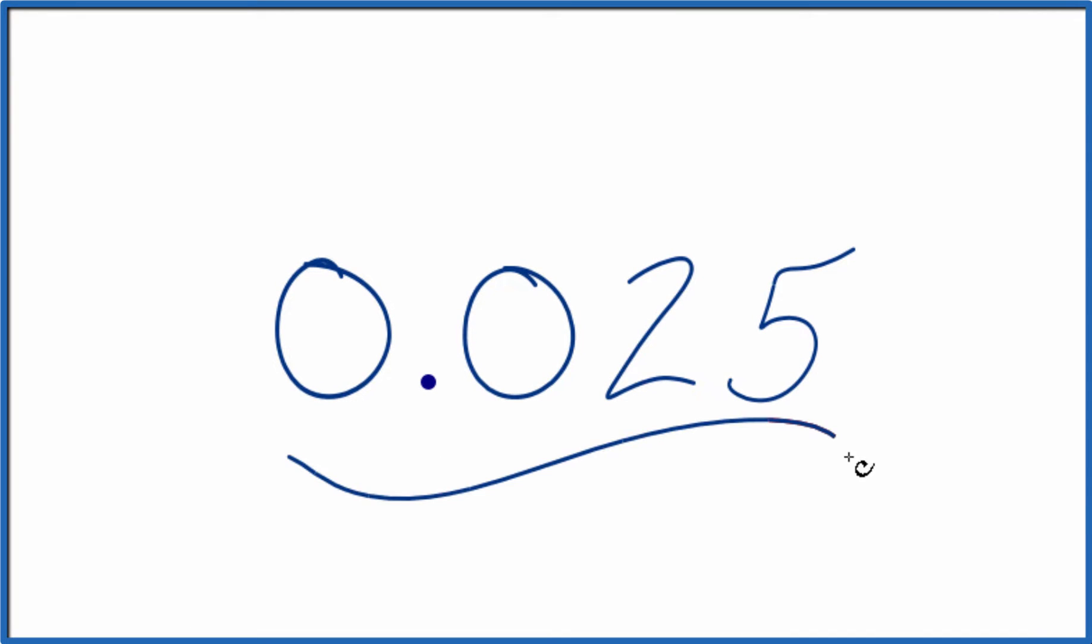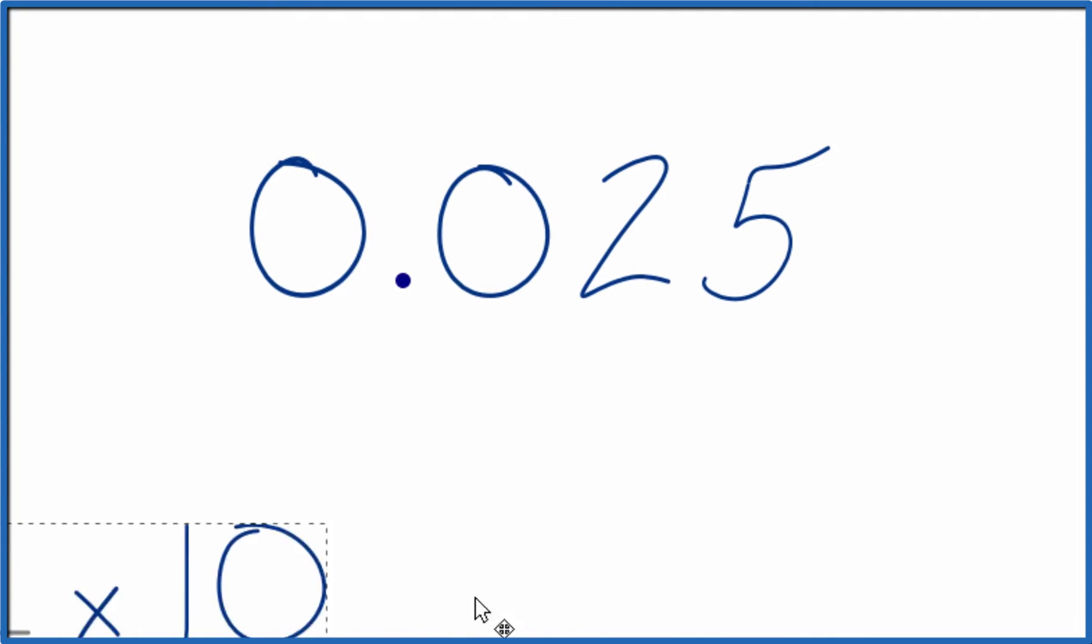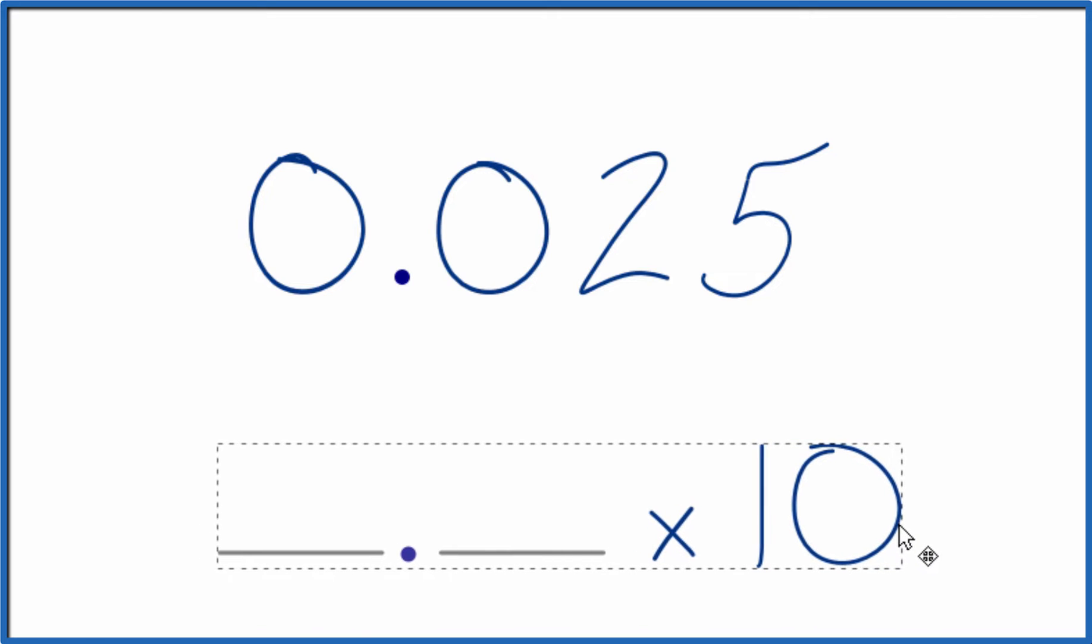Let's write 0.025 in scientific notation. Here's how we do it. We want to put it in this format right here. This is scientific notation. We'll have a whole number, then we'll have our decimal times 10 to some exponent up here.